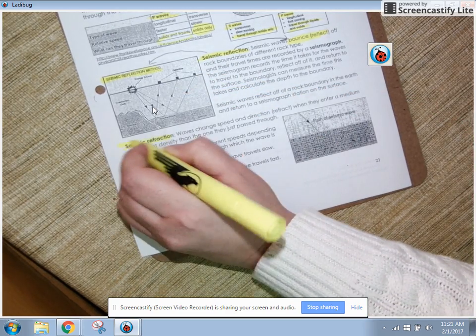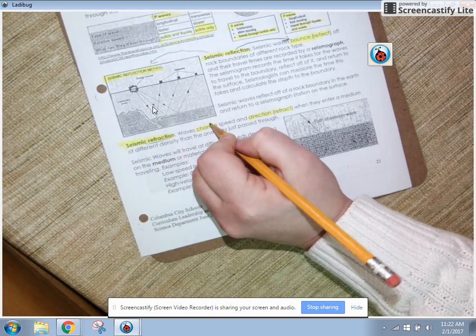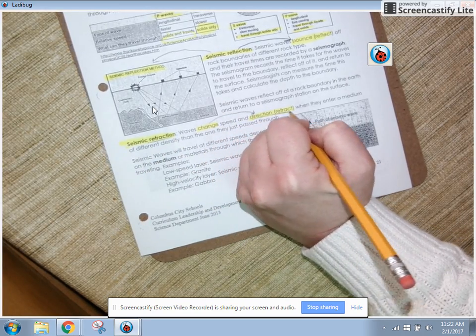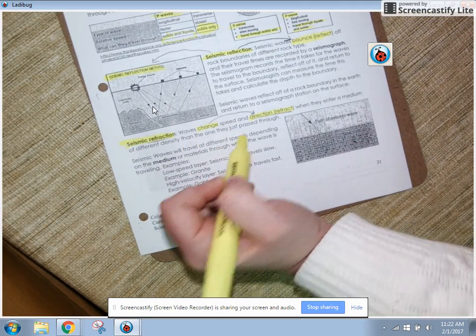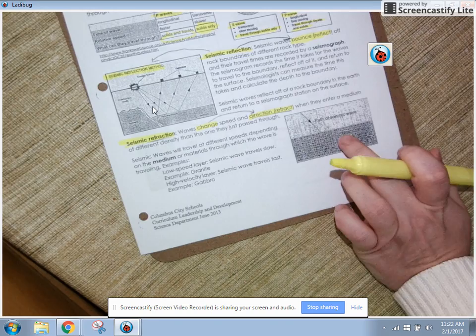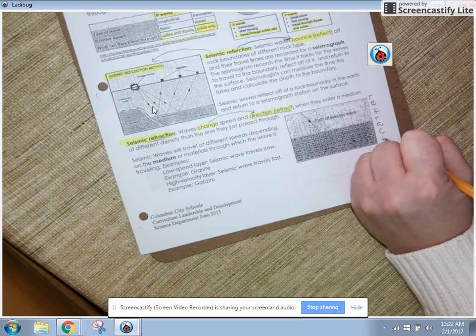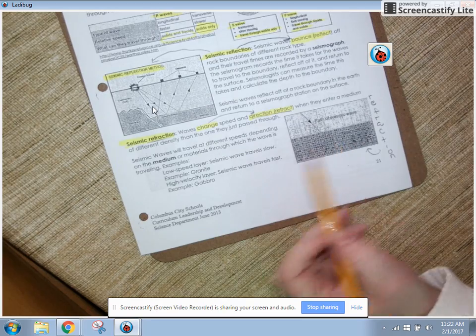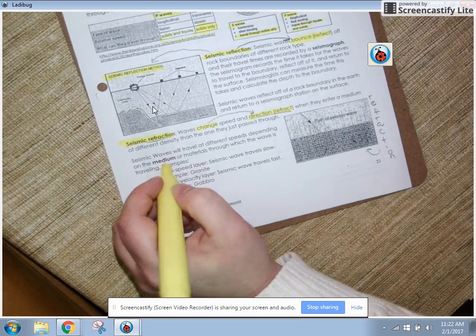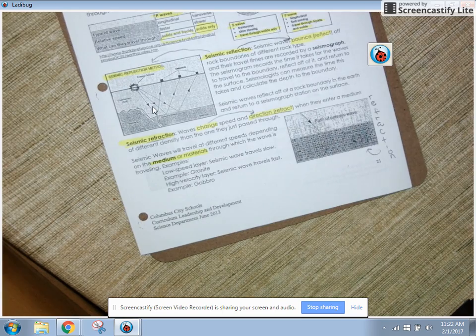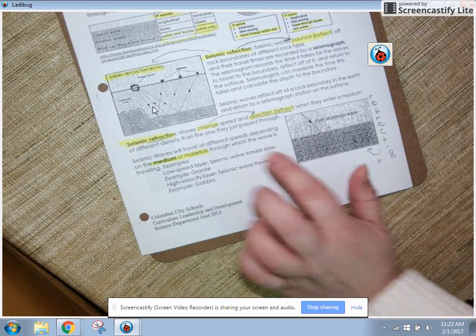Seismic refraction - waves change speed and direction. When we're talking about the word refraction, we are talking about a seismic wave changing its direction. And it says this happens when they enter a medium of different density than the one they just passed through. So we're going to look at this diagram in a minute. This diagram right over here shows refraction. They don't have it labeled, but this is refraction over here. We'll look at this in a minute. Seismic waves will travel at different speeds depending on the medium or materials they pass through. So a medium is just a material. Material could be a rock like granite or a rock like gabbro. A medium could be air through which the wave is traveling.